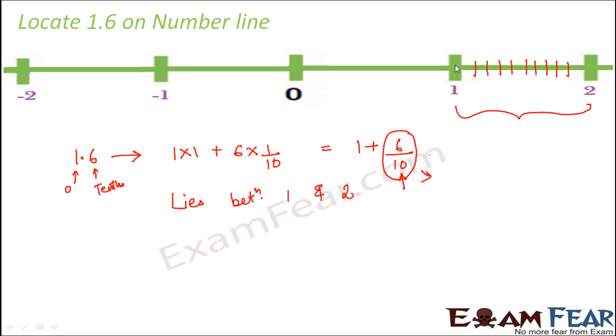So 1 is here. After 1, we want 6 parts out of 10 parts. That means 1, 2, so after 1, you have reached till 1. So first you come till 1 and then from 1, you have to take 6 parts: 1, 2, 3, 4, 5, 6. Six parts out of 10 parts. That means out of these 10 parts, you will consider only 6 parts.